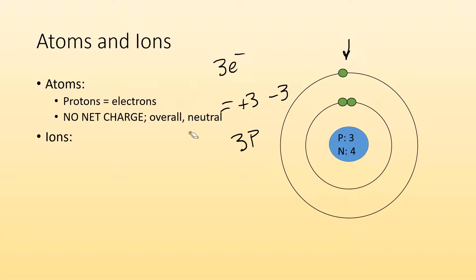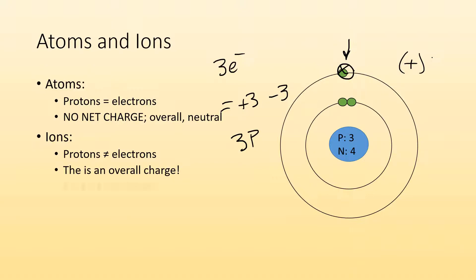Ions — that's not the case. Protons don't equal electrons. Maybe this atom lost an electron. If it got rid of an electron, it has a positive charge overall because electrons are negative. So when protons are greater than the number of electrons, you end up with a positive charge. But atoms could also gain electrons, in which case there are more electrons than protons and you end up with a negative charge overall.